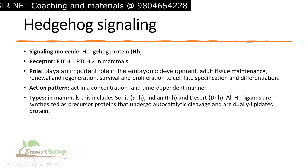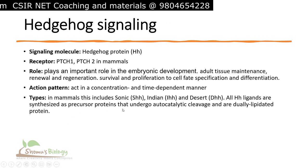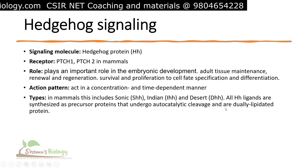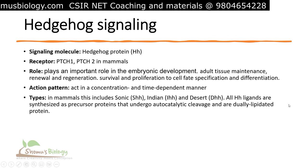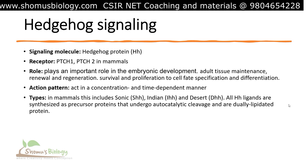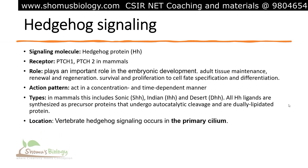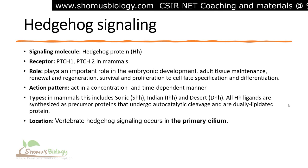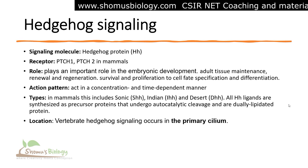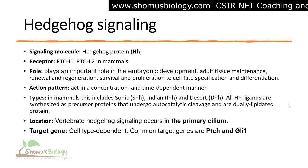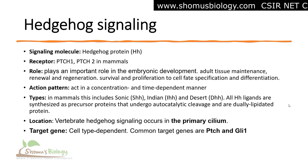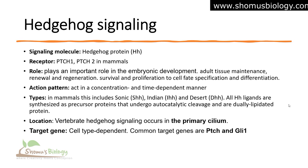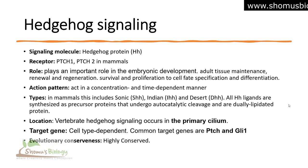All Hedgehog ligands are synthesized as precursor proteins that undergo auto-catalytic cleavage and are dual-lipidated proteins. In vertebrates, Hedgehog signaling occurs in the primary cilium. The target genes are cell-type dependent, but common targets are Patched (PTCH) and GLI1. Hedgehog signaling is highly evolutionarily conserved.